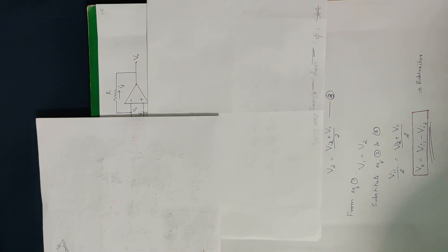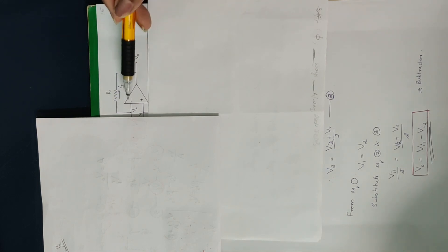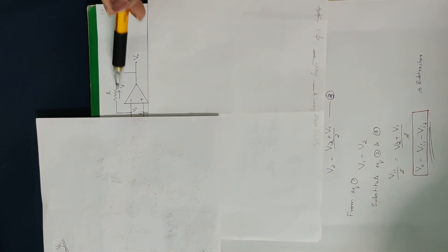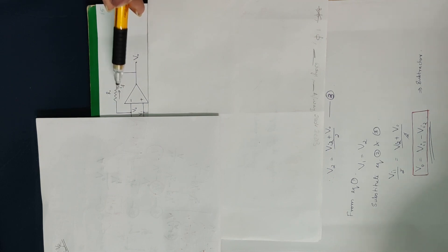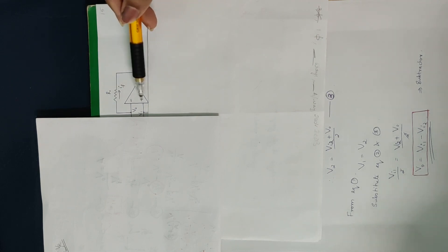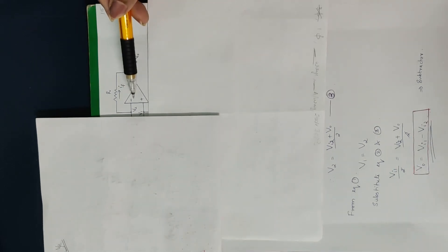This subtractor is a closed loop amplifier. A closed loop op-amp amplifier is a closed loop amplifier. Now we are going to use negative feedback here.